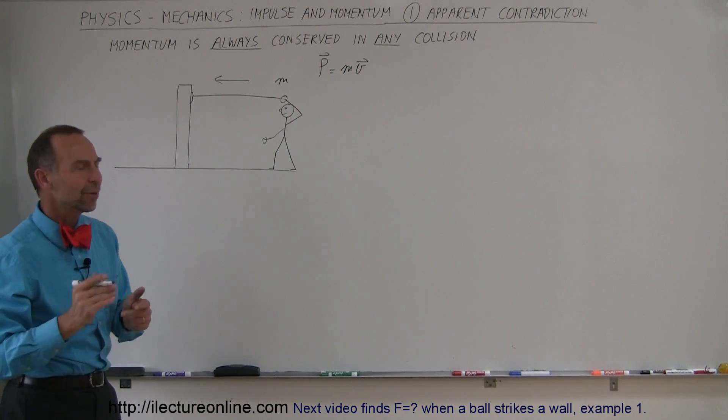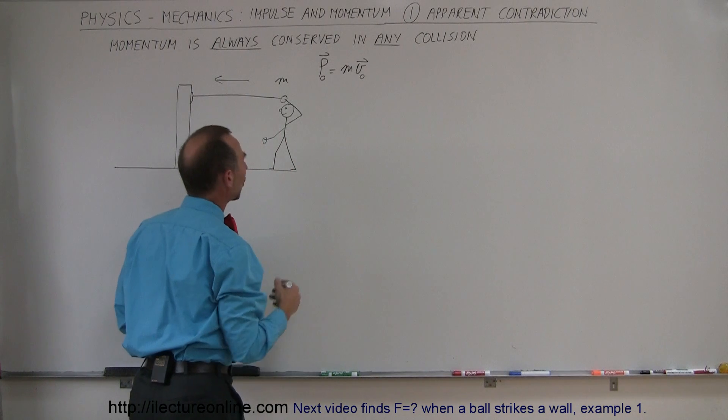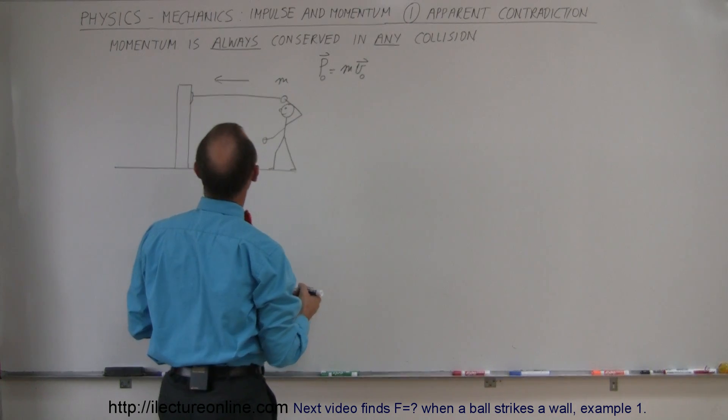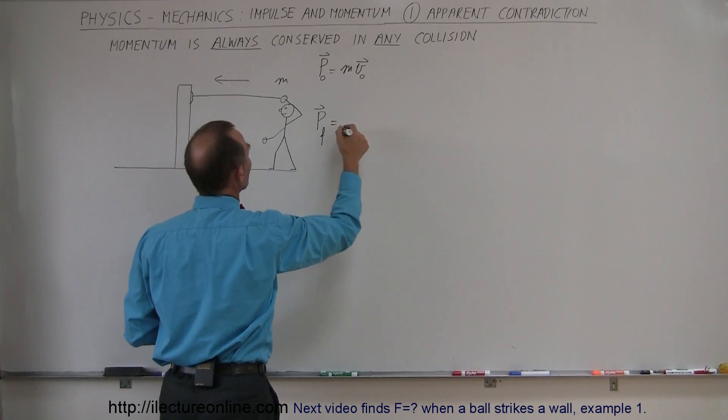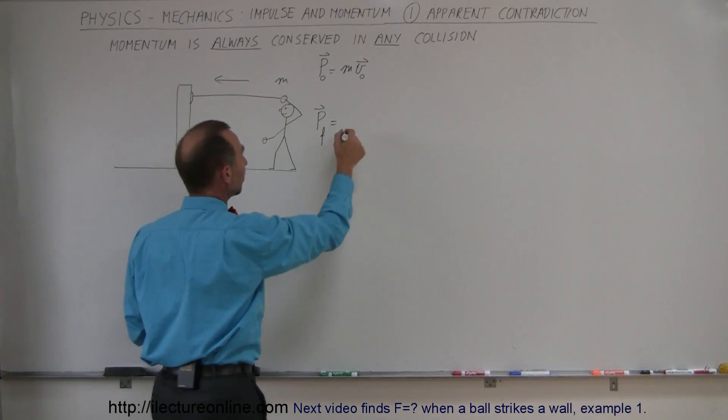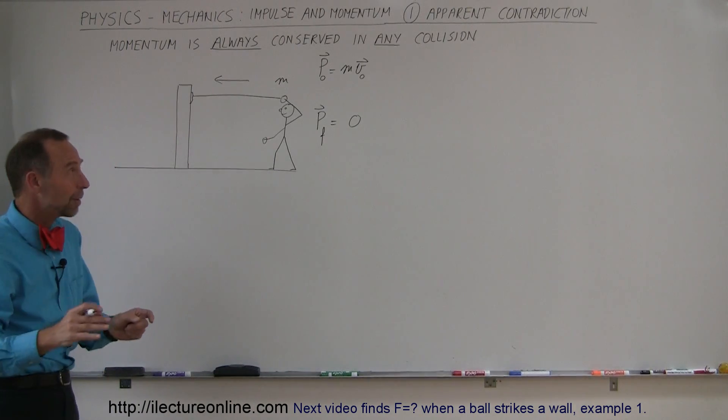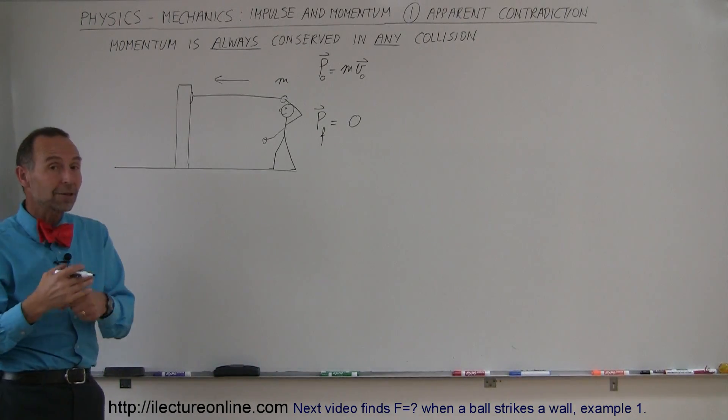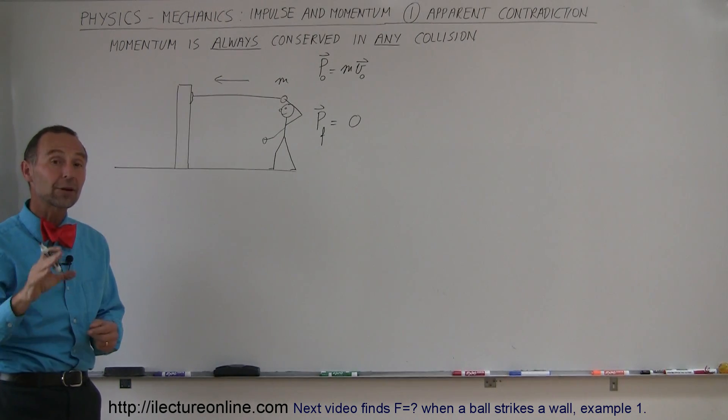And so what is the momentum afterwards? This would be P initial equals momentum initial, or momentum initial and V initial. And so momentum final is equal to, well, yes, it appears to be zero. So wait a minute. If it had momentum before the collision and after the collision has zero momentum, wouldn't that mean that momentum is not conserved? It would at least appear so in the beginning.